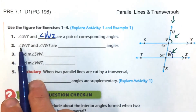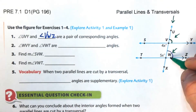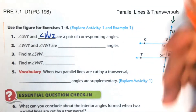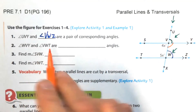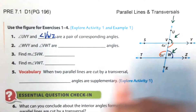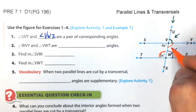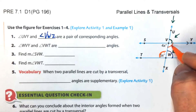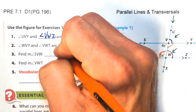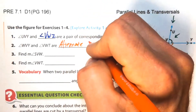Number 2: Angle WVY and angle VWT — what is their relationship? Both are on the inside of the parallel lines, making them interior. One is on one side of the transversal, the other is on the other side — they are on alternate sides. Therefore they are alternate interior angles.